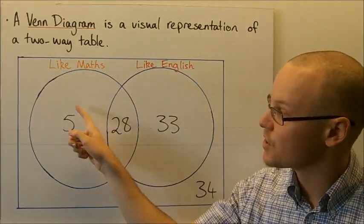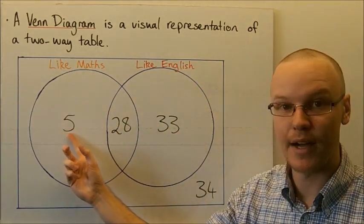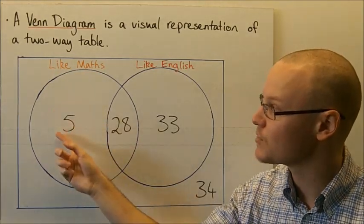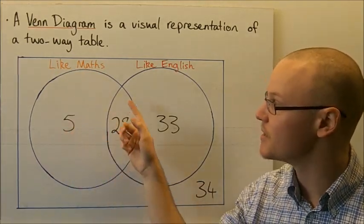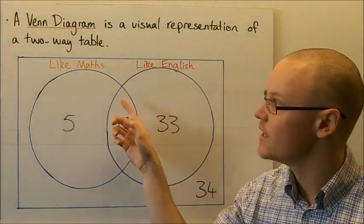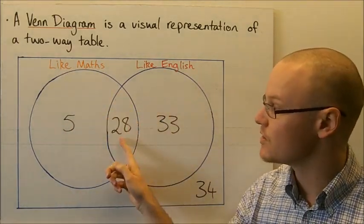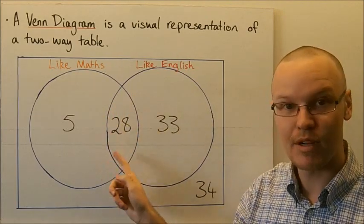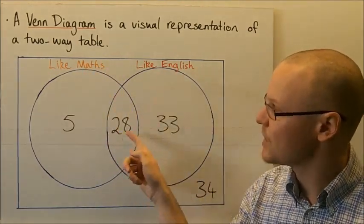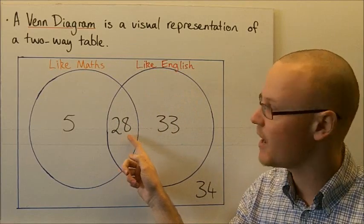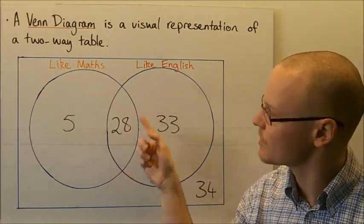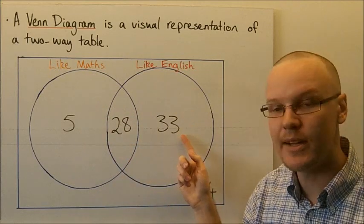The number in the left part of the Maths circle — 5 — is the number of students who like Maths but did not like English; they're not part of the liking English circle. The students at the intersection of the two circles are the students that like both Maths and English — that's 28 students who liked Maths and liked English.